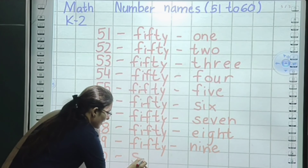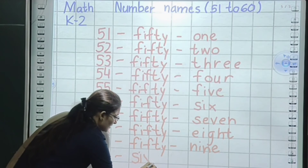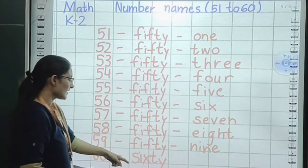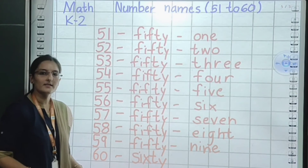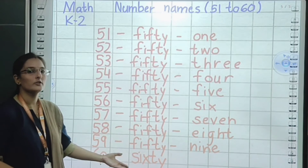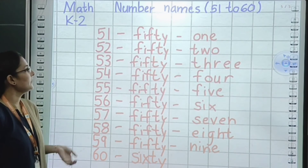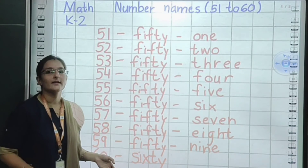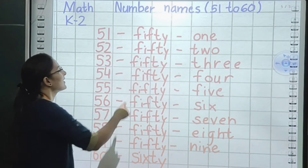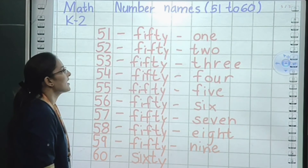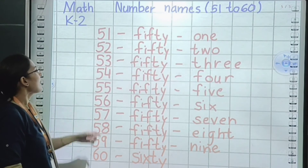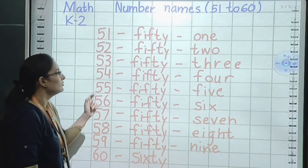Next number: 59. Small sleeping line. Again, same spelling: F, I, F, T, Y — fifty. Small sleeping line. Spelling of 9: N, I, N, E — nine. So 59 is fifty-nine.